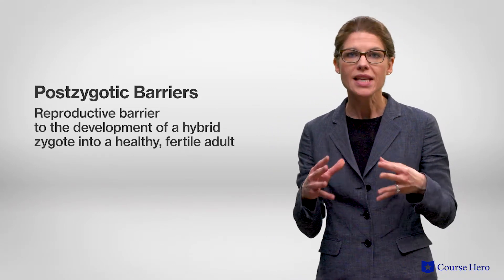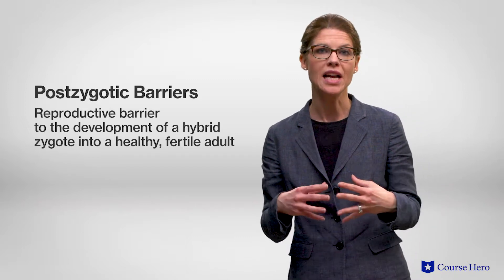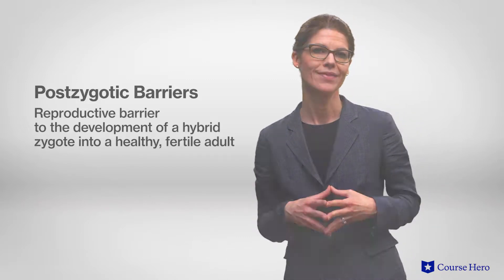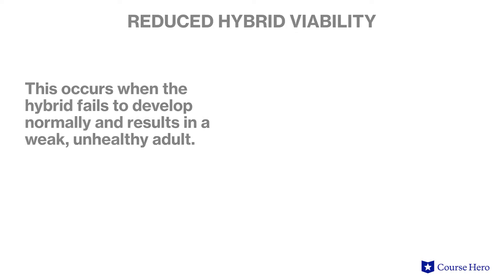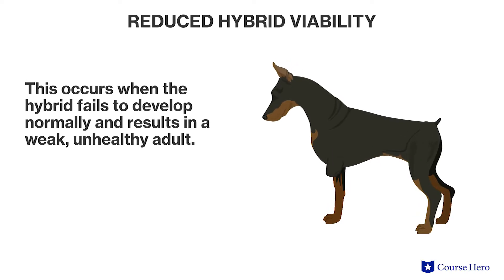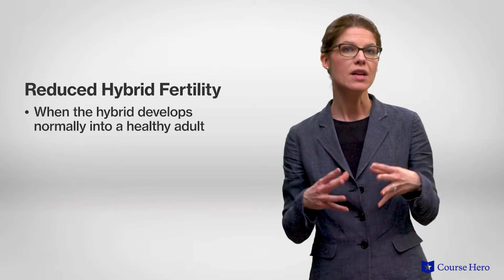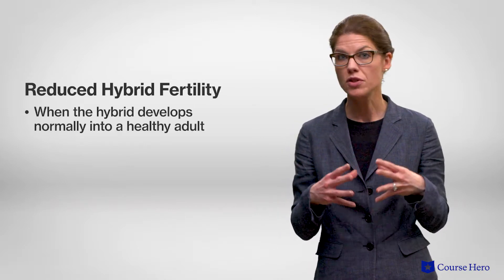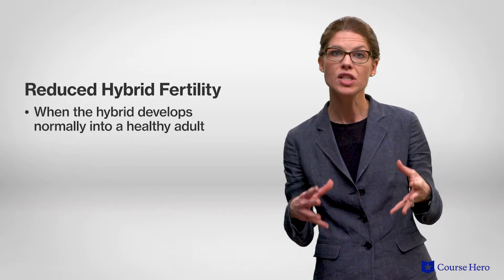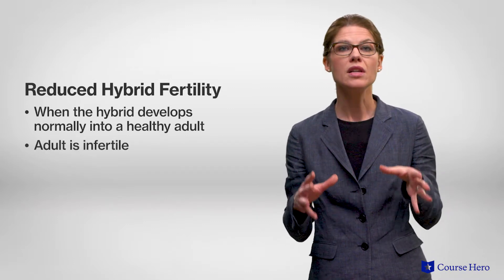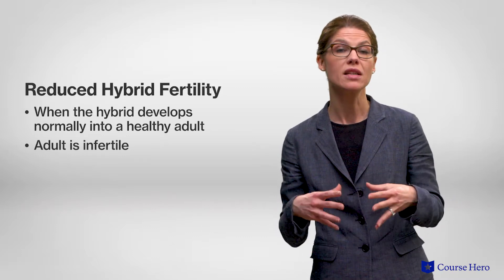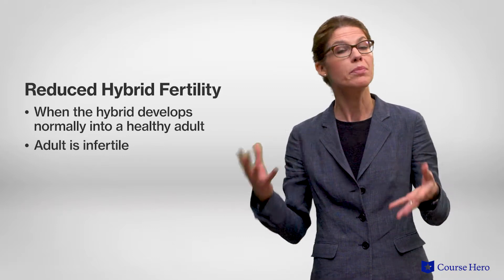The second type of reproductive barrier is the postzygotic barrier, which is a barrier to the development of a hybrid zygote into a healthy, fertile adult. Let's take a look at the several types of postzygotic barriers. One: reduced hybrid viability. This occurs when the hybrid fails to develop normally and results in a weak, unhealthy adult. Two: reduced hybrid fertility. This occurs when the hybrid develops normally into a healthy adult and may be a very strong and robust individual. However, the adult is infertile, or the hybrid makes gametes but those gametes will not fuse with the gametes of the previous generation.